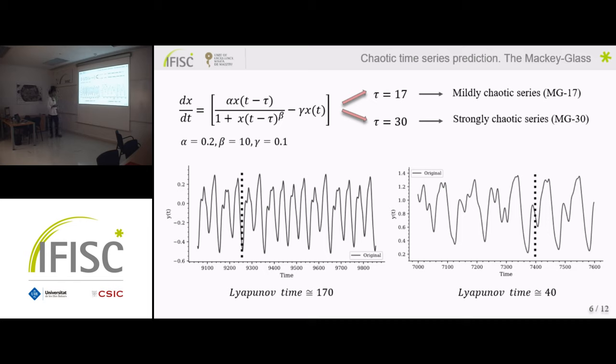So this is, for example, this is the Mackey-Glass 17, and this is the 30 one. I computed also the Lyapunov times, it's the inverse of the Lyapunov exponent of each series.